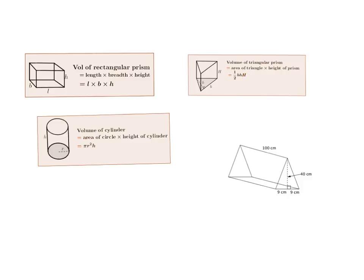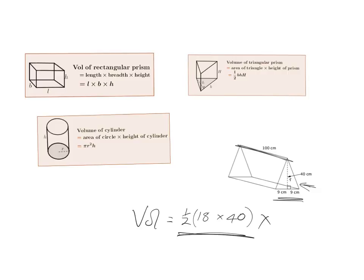So the volume of a triangular prism is: area of the triangle, which is half base times height, multiplied by the capital H height of the prism. For this example, the volume equals the area of the triangle at the bottom: half times base 18 (which is 9 plus 9) times the triangle height of 40, giving the area of the base, and when we work that out we get 36,000 centimeters cubed.